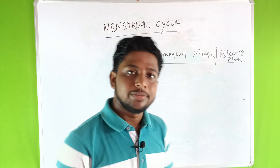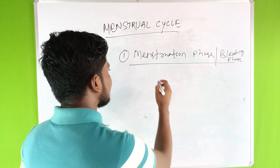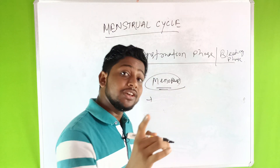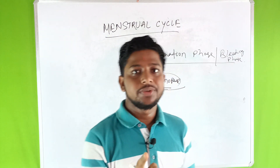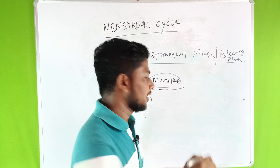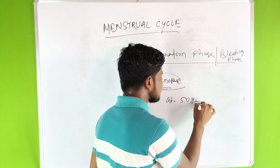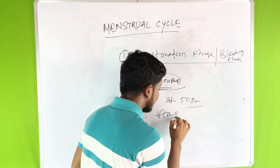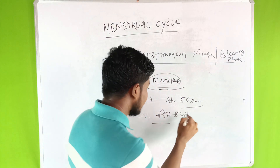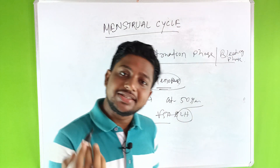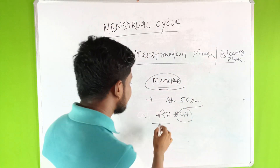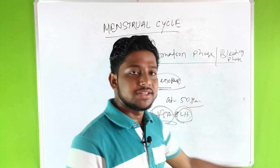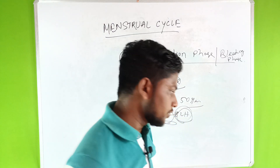The stopping of the menstrual cycle is indicative of pregnancy. Another important term is menopause — menopause means the stopping of the menstrual cycle at the age of 50 years, due to a decrease in the secretion of FSH (follicle stimulating hormone) and LH (luteinizing hormone). When the secretion of these hormones decreases, the menstrual cycle ceases.